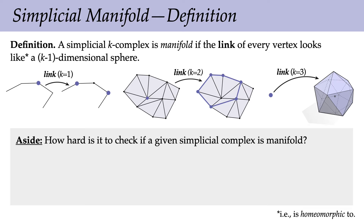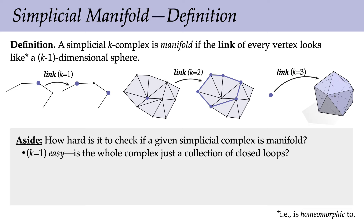As a computational aside: in order to know whether a given simplicial complex is manifold, we have to check whether the link of every vertex looks like a (k−1)-dimensional sphere. Is it easy to do computationally? For a one-complex — a graph — it's manifold when the whole thing just looks like a collection of closed loops. If three edges meet at a single vertex, that vertex doesn't satisfy our definition because the link will be three points, not two.